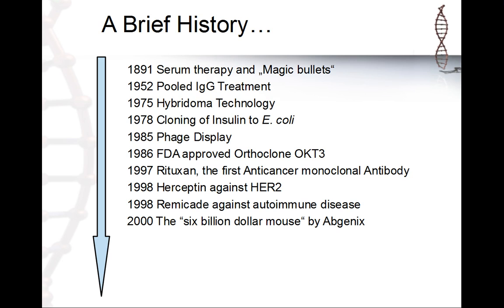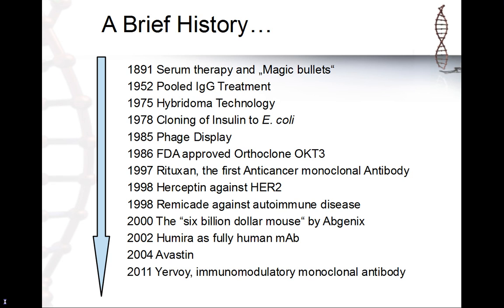With Abgenix, we produced human monoclonal antibodies generated in a mouse — really really impressive, like a library where you can produce human monoclonal antibodies in mice. The first fully human monoclonal antibody came to the market called Humira, also known as adalimumab. Then Avastin came in 2004 and Yervoy as an immune-modulating monoclonal antibody came to the market.